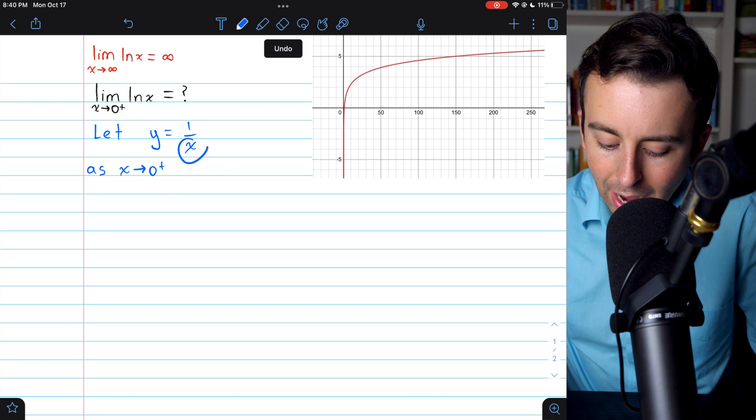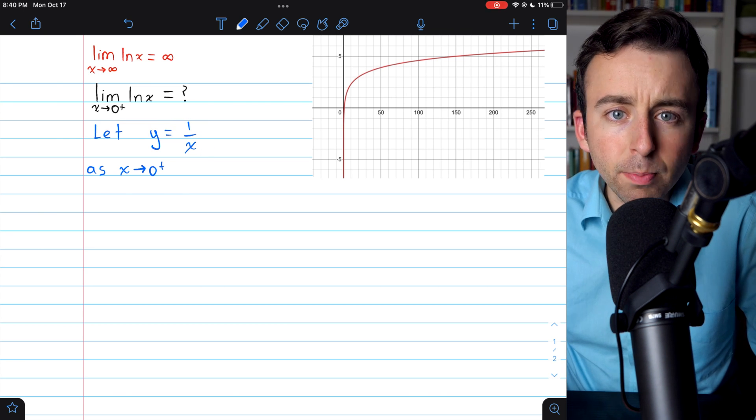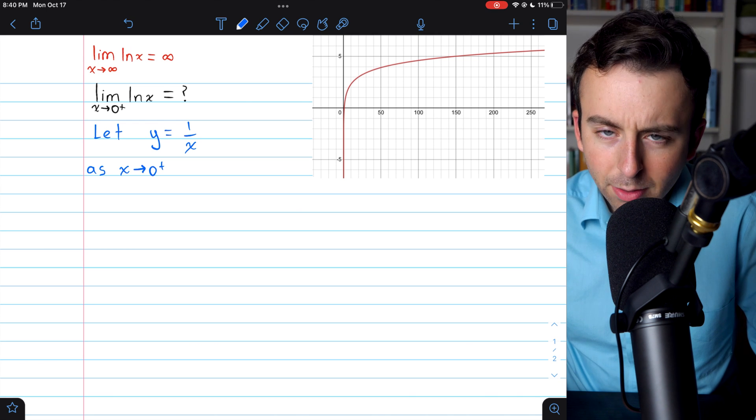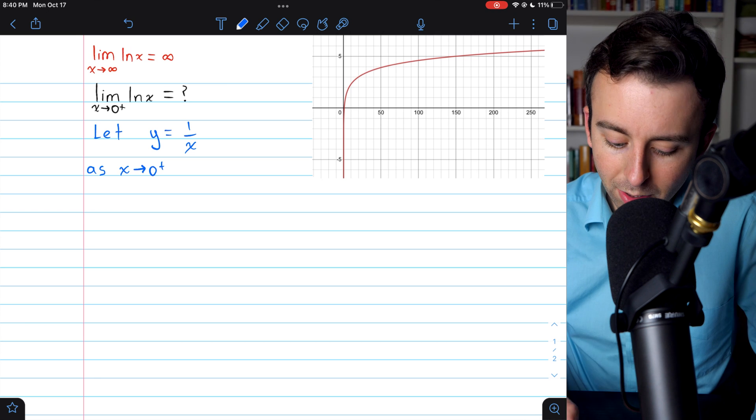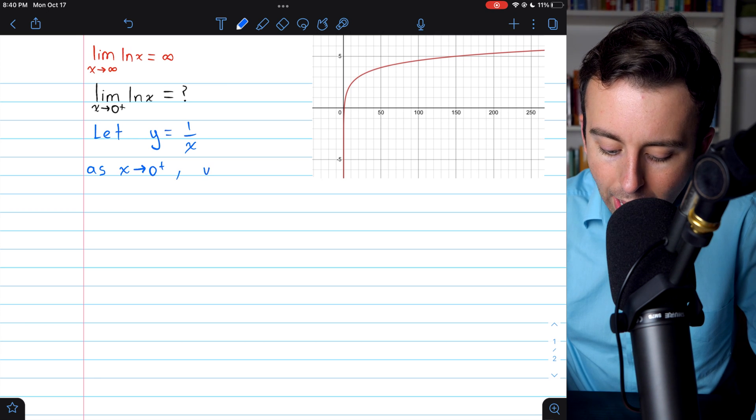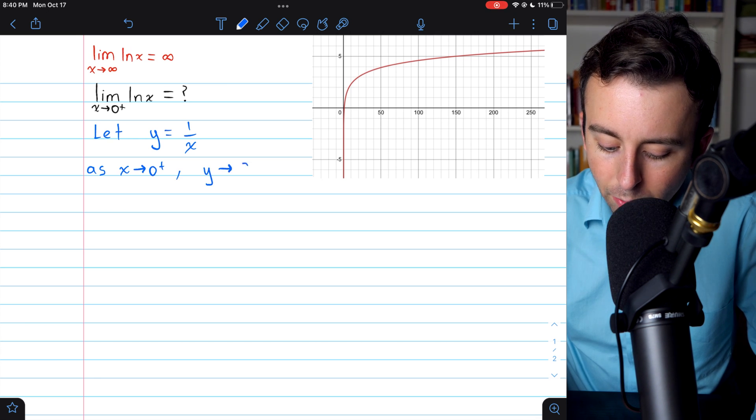Well, that will become 1 divided by some really small positive number. So that's going to be some giant positive number. So as x approaches 0 from the right, y will be approaching positive infinity.